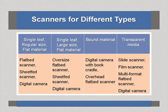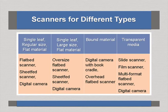What scanner should be used for what kind of material? For example, for a single leaf — such as a letter or regular A4 size flat material — a flatbed scanner, sheet-fed scanner, or digital camera can be used. Digital cameras are common for all kinds of material. Some scanners come with an attachment where you can feed 50 loose sheets continuously, just as with Xerox machines.